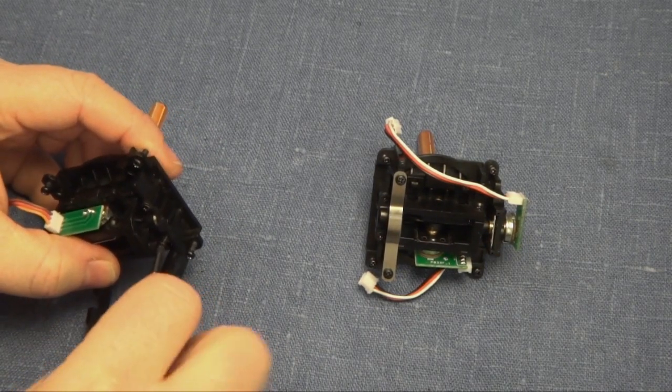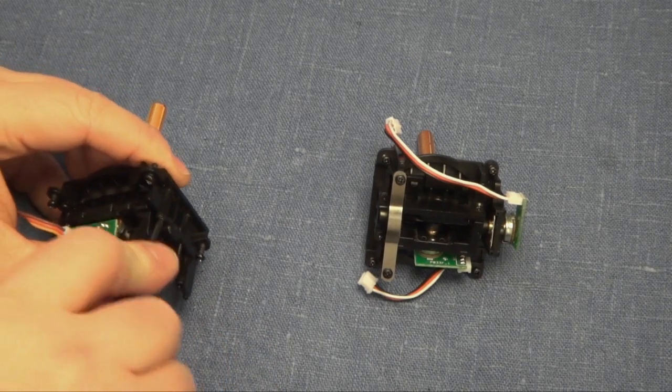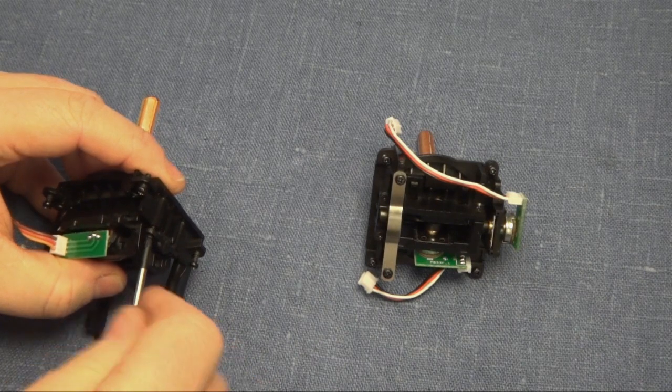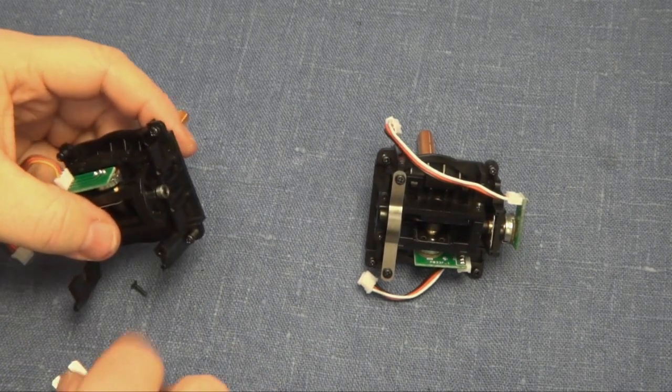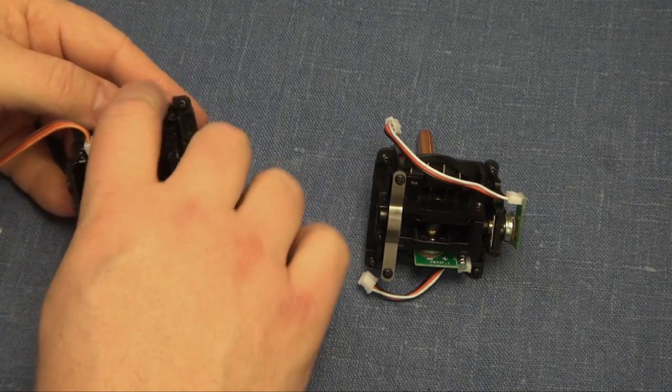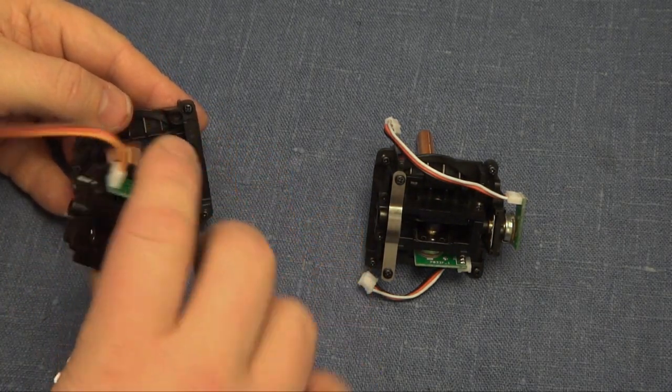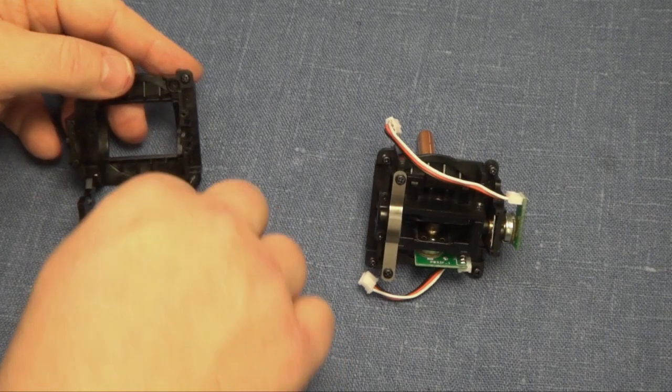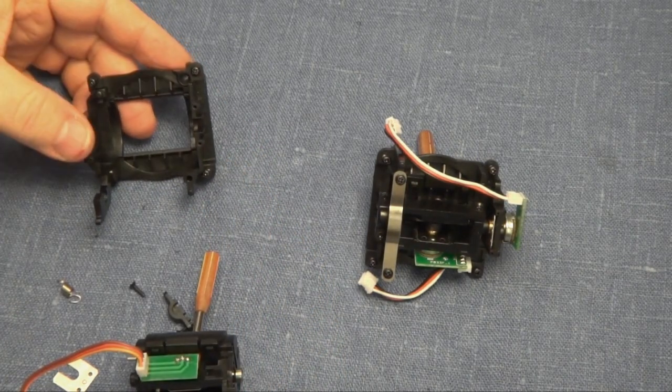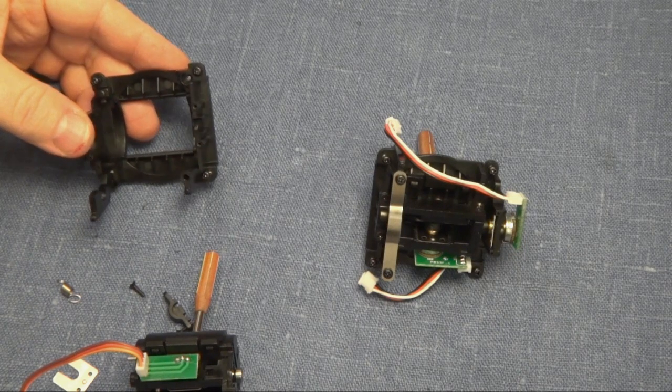And now I'm unscrewing the two screws that is holding the ball bearing in place. And that's the last thing holding the arm to the outer case. And now we can pull it apart gently. And you saw the two pins there. And I had the feather too.